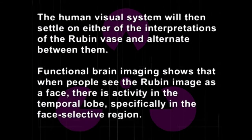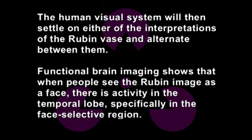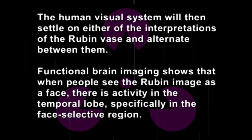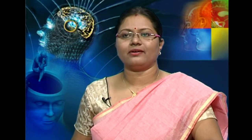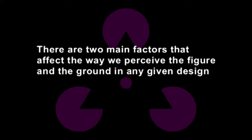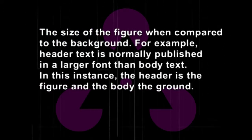On the other hand, if the edges are assigned outward, the two black profile faces are perceived. The background is white and the figure is black. The human visual system settles on either one interpretation of the Rubin vase and alternates between them. Functional brain imaging shows that when people see the Rubin image as a face, there is activity in the temporal lobe, specifically in the face-selective region. There are two main factors that affect the way we perceive figure and ground in any given design: the size of the figure compared to the background — for example, header text is normally published in a larger font than body text, making the header the figure and the body the ground.